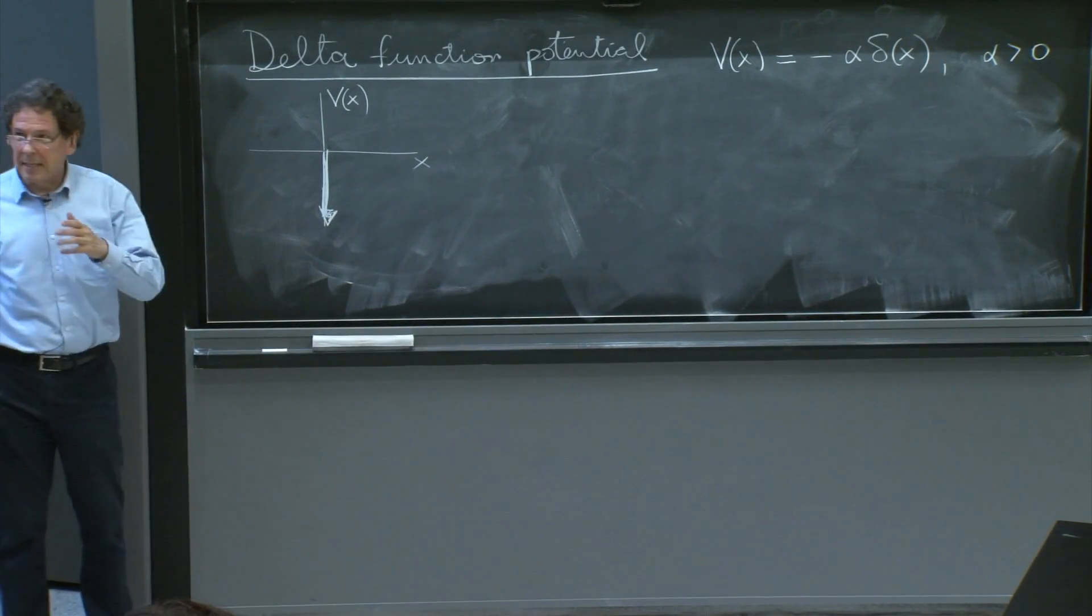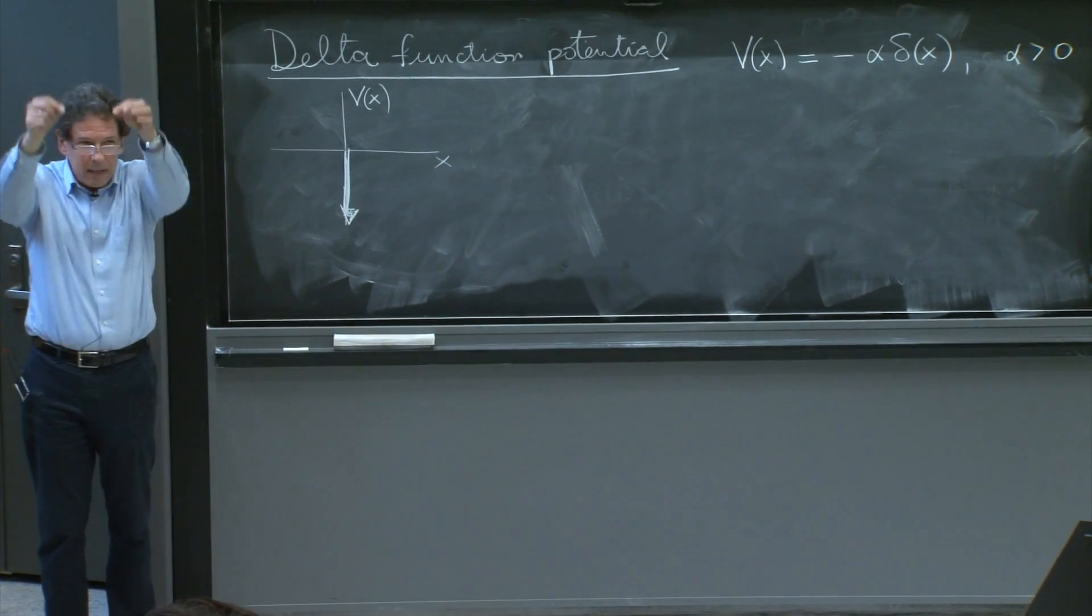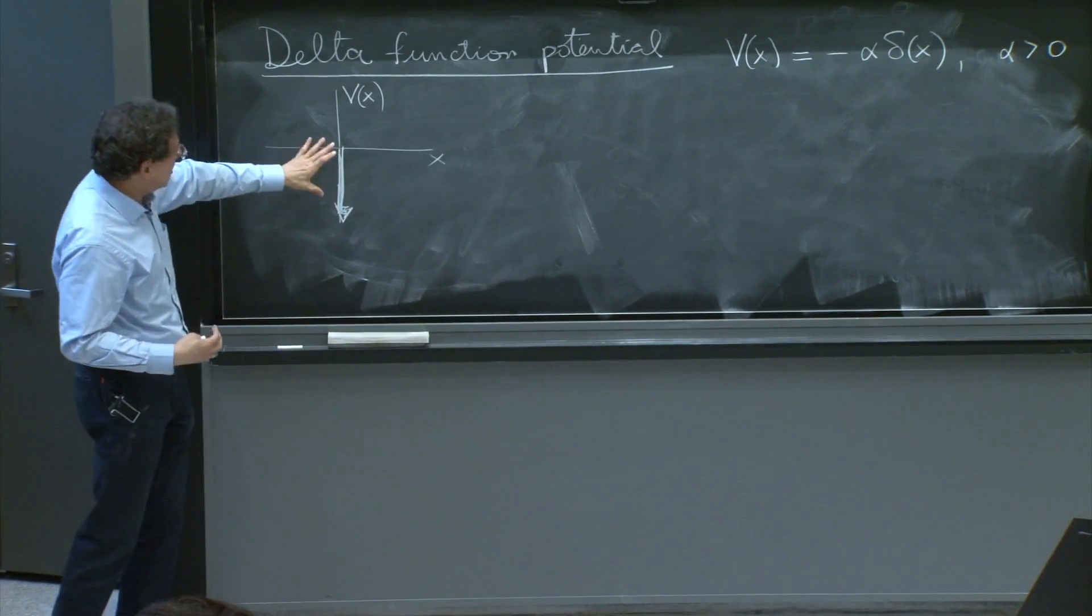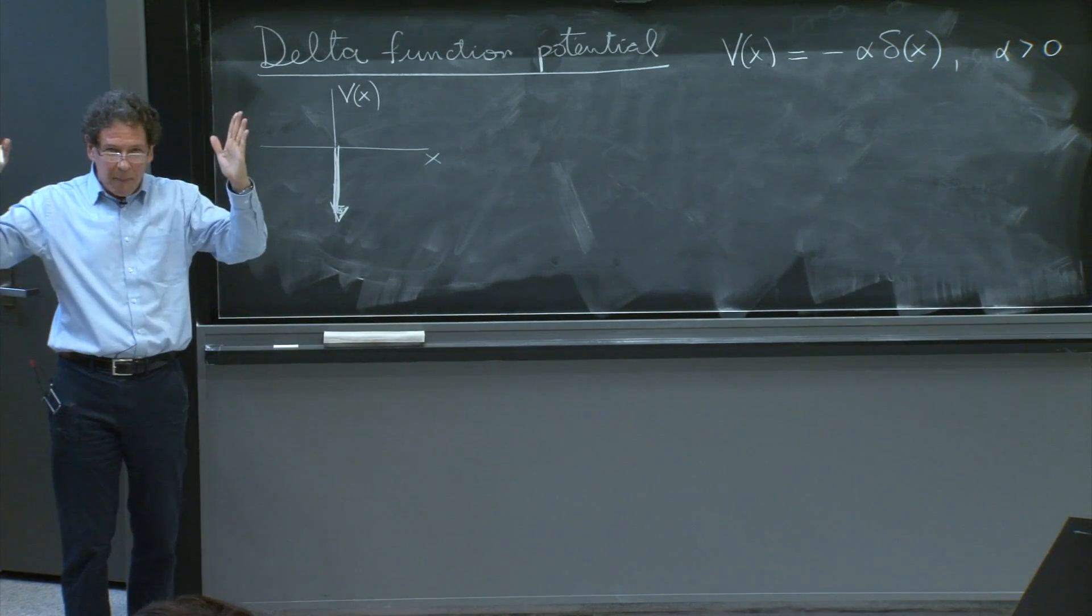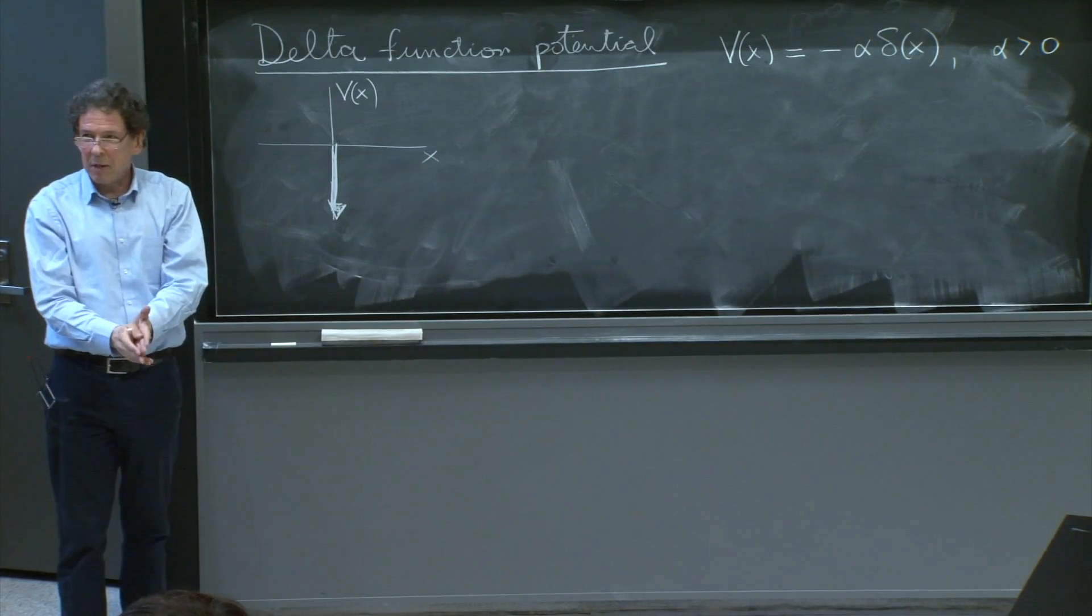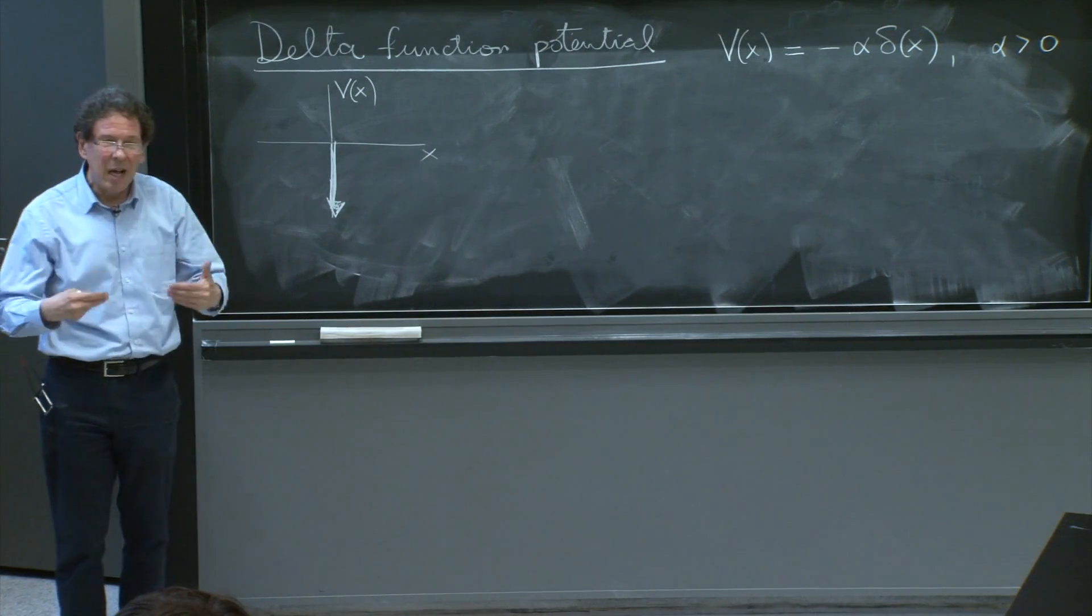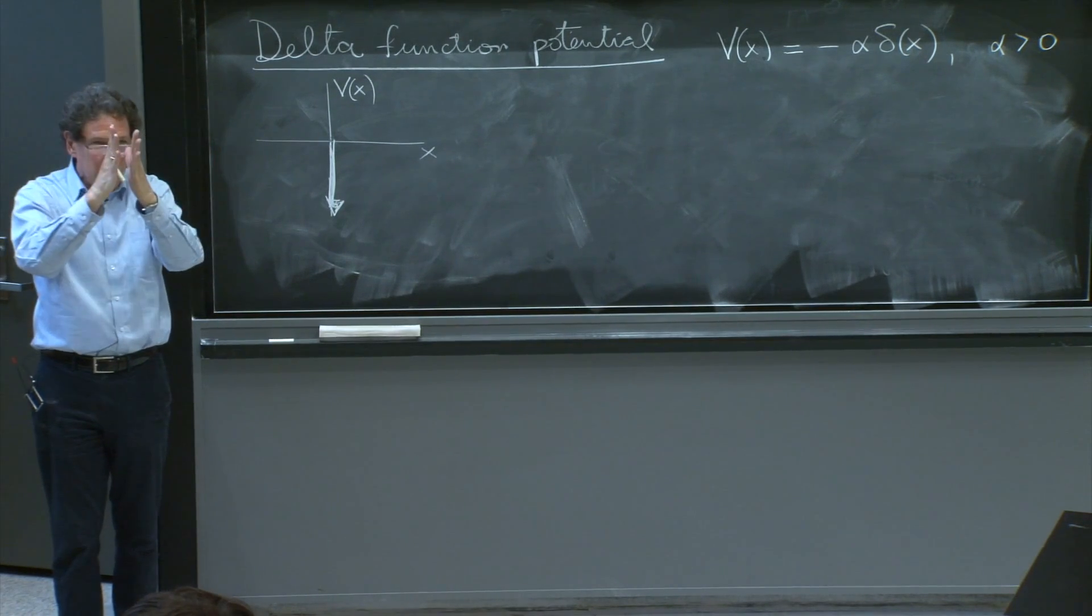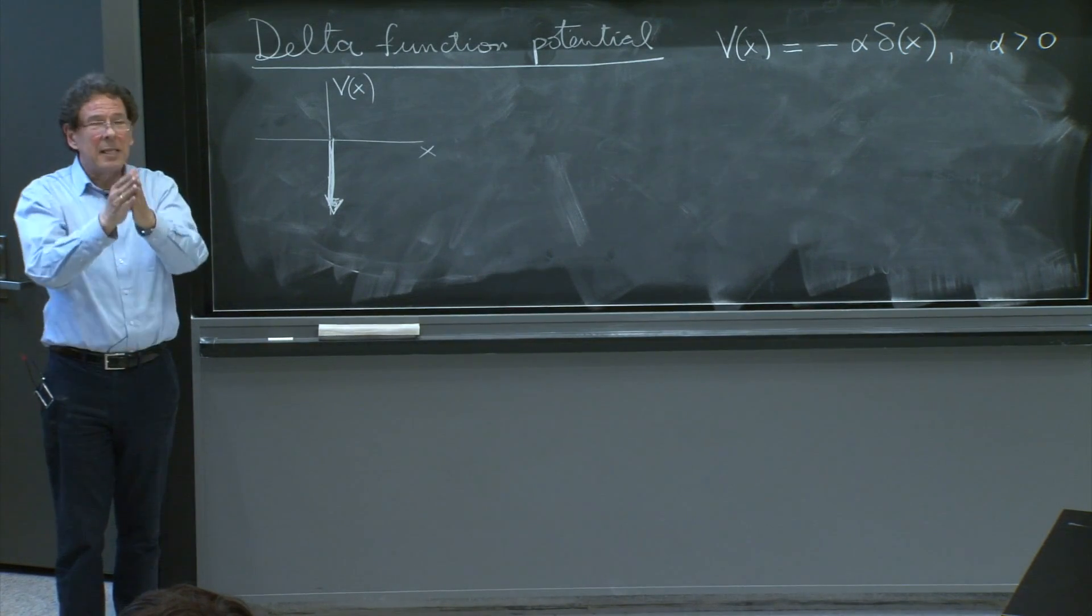It can be thought of as the limit of a square well that is becoming deeper and deeper. In fact, that could be a way to analytically calculate the energy levels by taking carefully the limit of a potential that is becoming thinner and thinner but deeper and deeper, which is the way you define or regulate the delta function. You can imagine the delta function as a sequence of functions becoming more and more narrow but deeper at the same time, so the area under the curve is still the same.